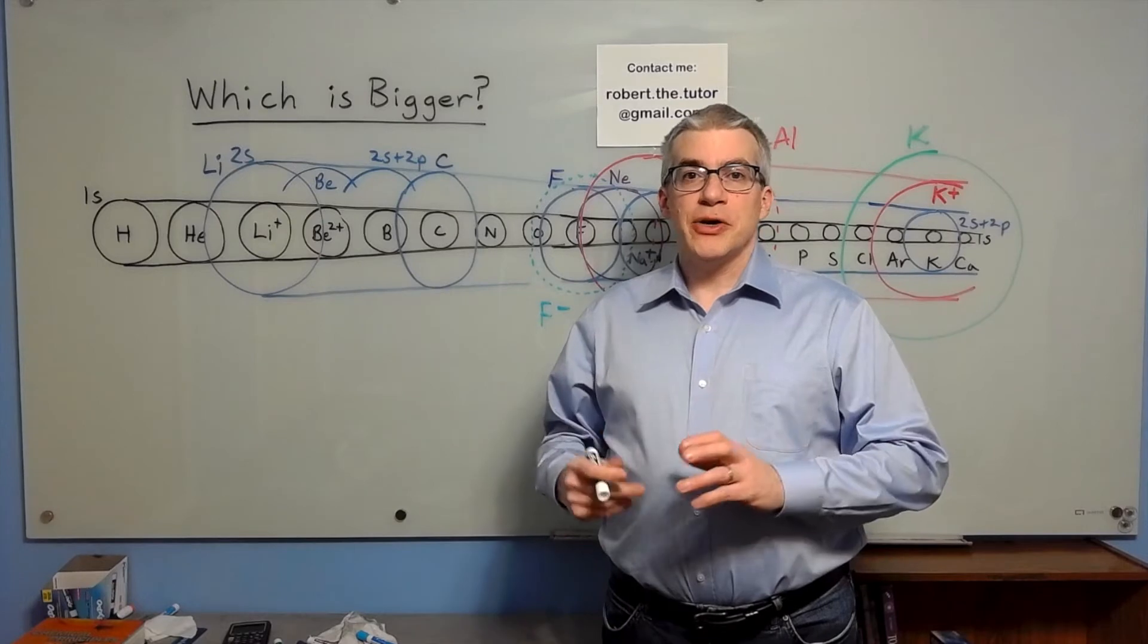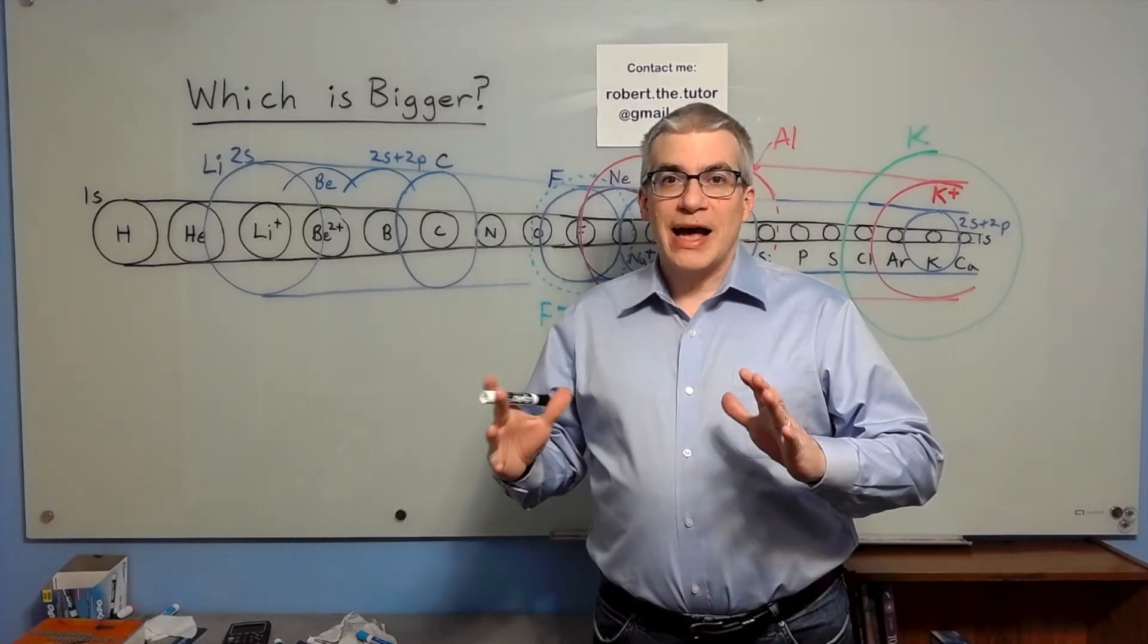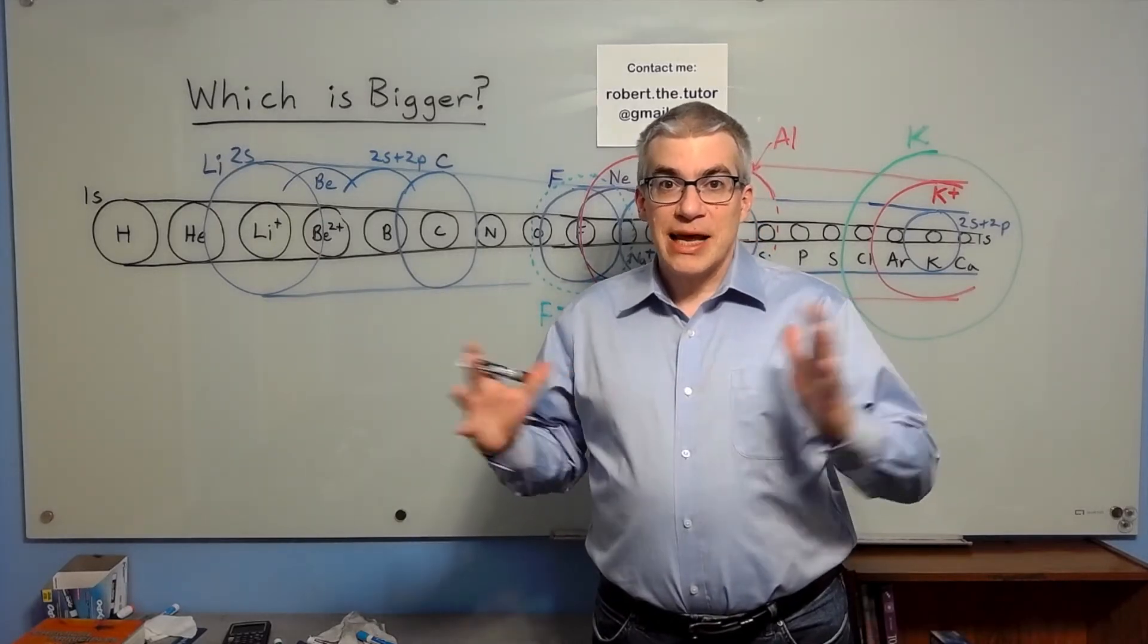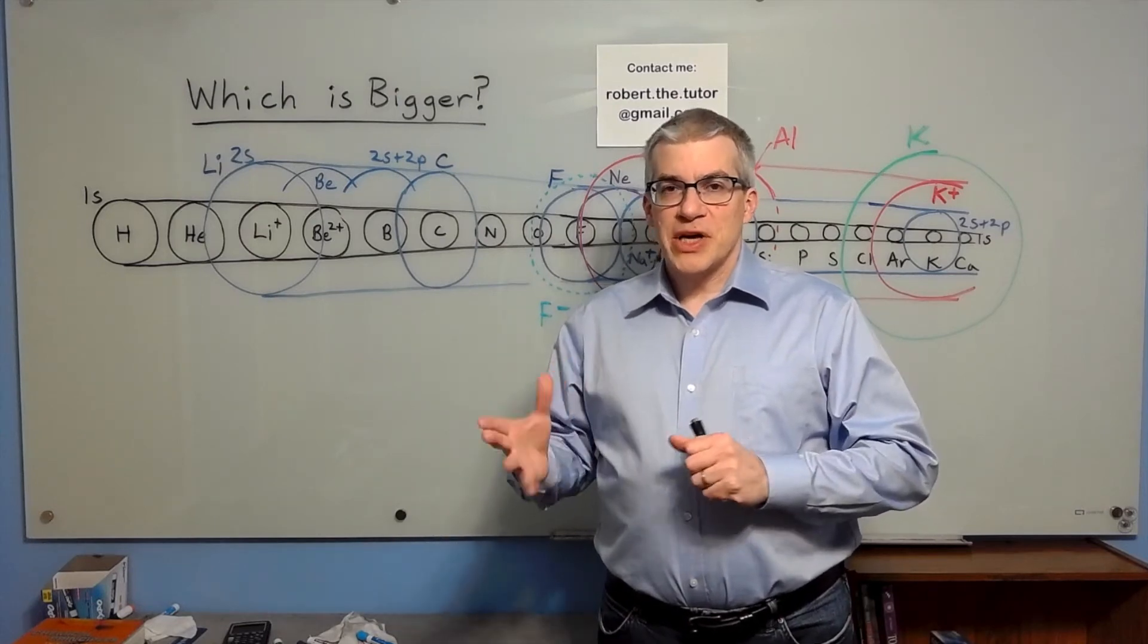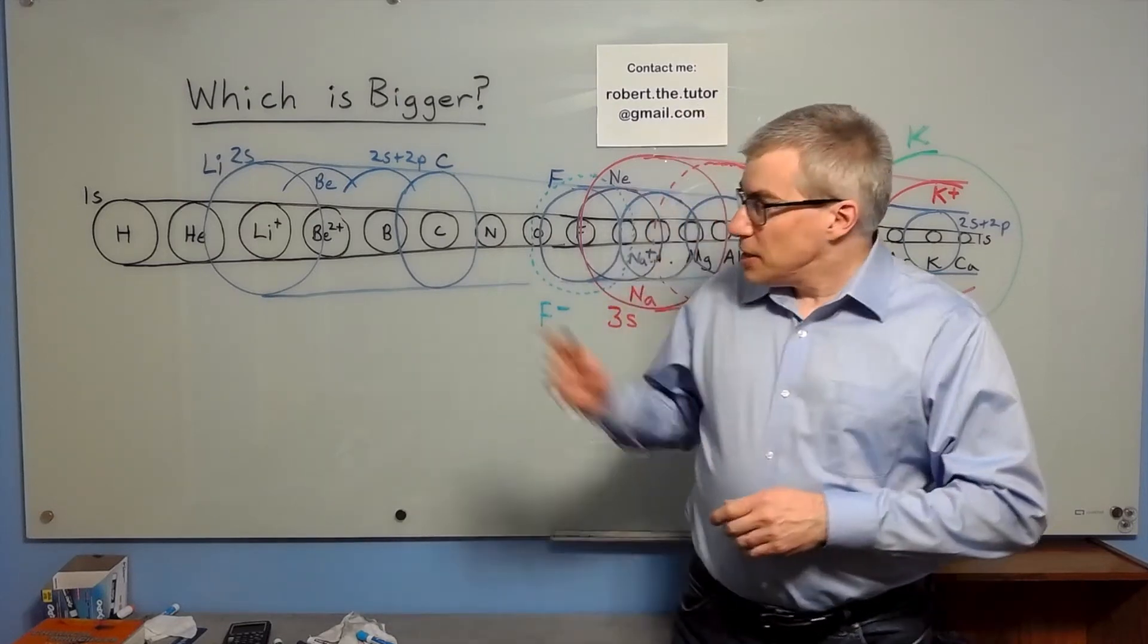Sometimes you need to compare the sizes of atoms, cations, and anions. So why do they have the size rankings they do? Here's the basic idea.